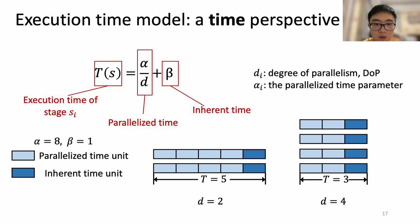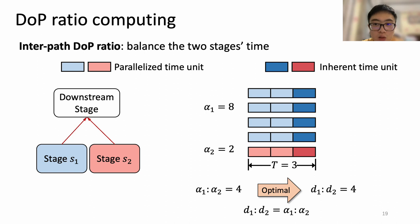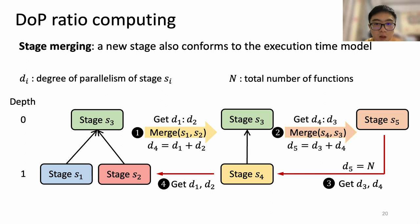With the time model, we want to minimize JCT for serverless analytics. For two stages connected by data dependencies, completion time is the sum of their execution times; we formally prove the optimal condition is that the ratio of their DOPs equals the square root of the ratio of their alphas. For two stages sharing the same downstream stage, completion time is the maximum of their execution times; we balance their execution times, yielding an optimal DOP ratio equal to the ratio of their alphas. We can merge two stages into a new virtual stage, and compute optimal DOP ratios step by step for arbitrary DAGs. Please refer to our paper for the detailed algorithm description.